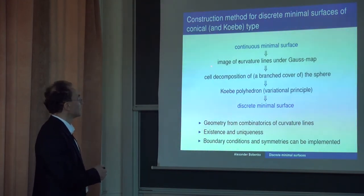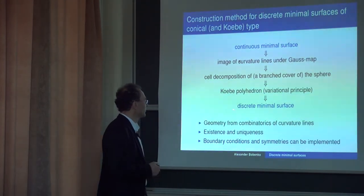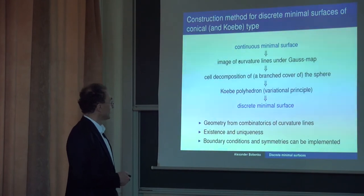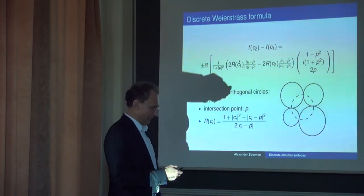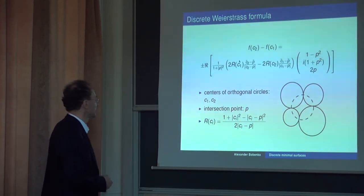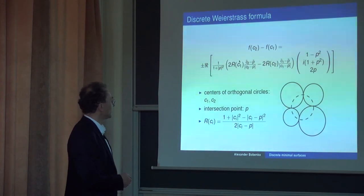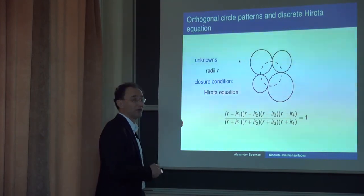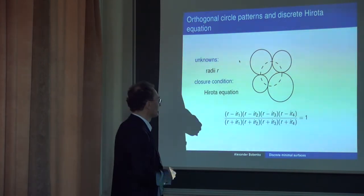The construction method is: start with a continuous surface, take its Gauss map, consider the corresponding combinatorial data, construct the Kerber polyhedron, and construct the corresponding minimal surface. You end up with an explicit formula — a discrete Weierstrass formula analogous to the formula in the smooth case.